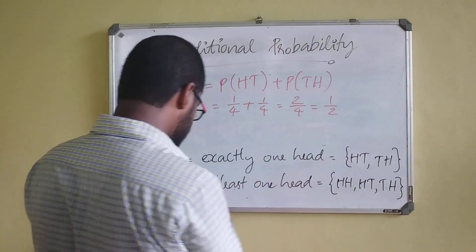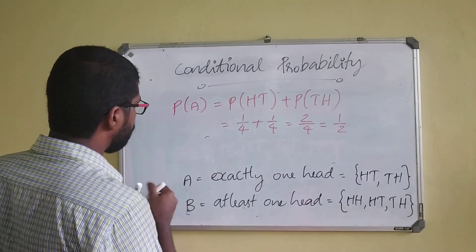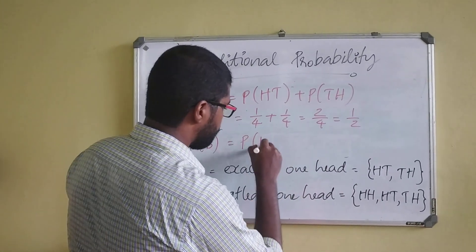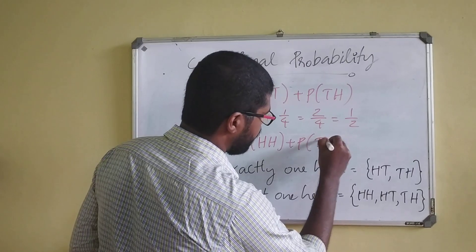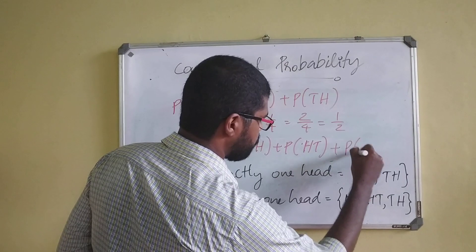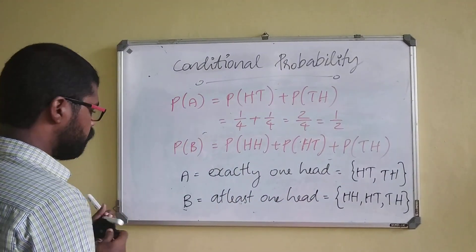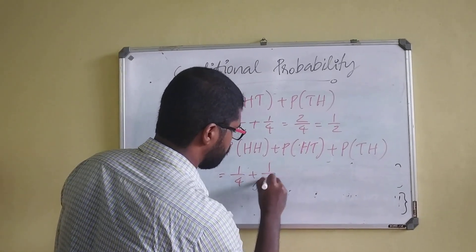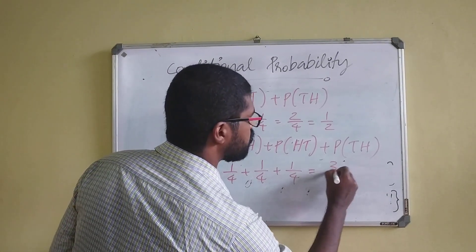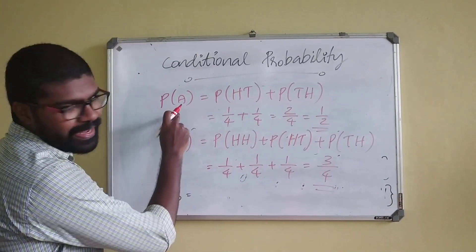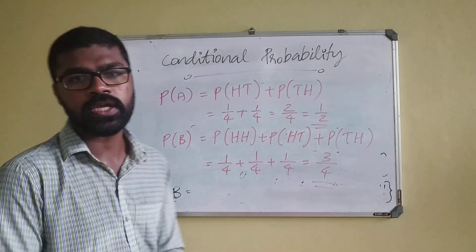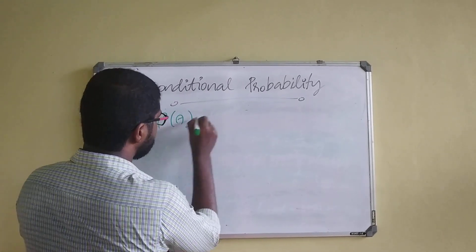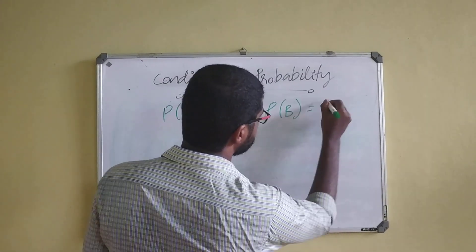Now let's find the probability of B, that is at least one head: head-head, head-tail, and tail-head. So we have 1/4 plus 1/4 plus 1/4, that is 3/4. So probability of A is 1/2 and probability of B is 3/4 using the normal probability method.